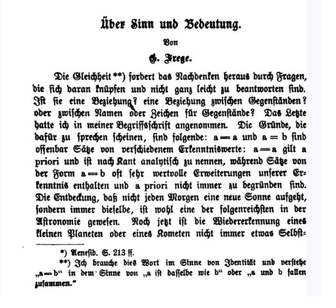Frege's notion of sense is somewhat obscure, and Neo-Fregeans have come up with different candidates for its role. Accounts based on the work of Carnap and Church treat sense as an intension, or a function from possible worlds to extensions. For example, the intension of "Number of planets" is a function that maps any possible world to the number of planets in that world. John McDowell supplies cognitive and reference-determining roles. DeWitt treats senses as causal historical chains connecting names to reference.